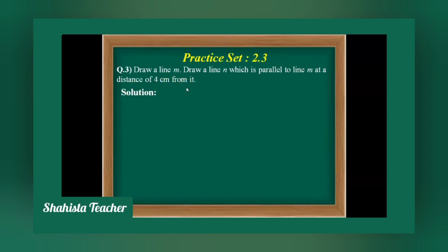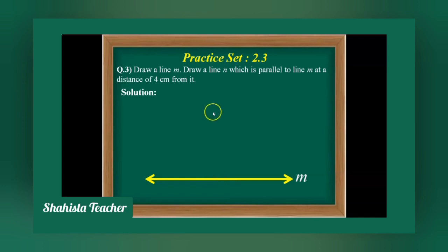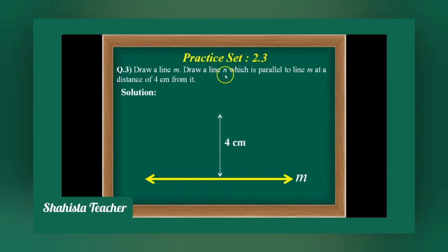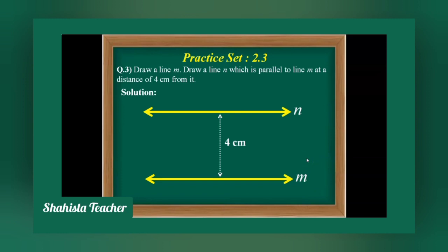First of all we have to draw line M. After drawing line M, we have to take a distance from the middle. From the center we have to take a distance of 4 cm — take the help of a scale and measure a distance of 4 cm from the center. Now we have to plot a second line which is parallel to M. Draw line N here. Line N is parallel to line M. In this way we finish question number three.